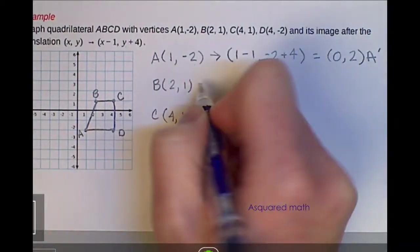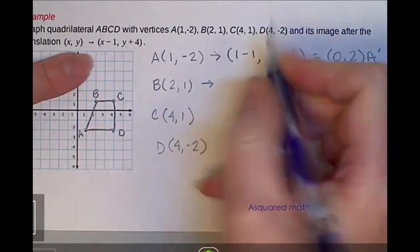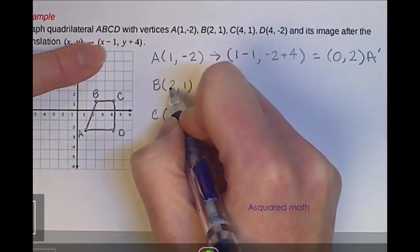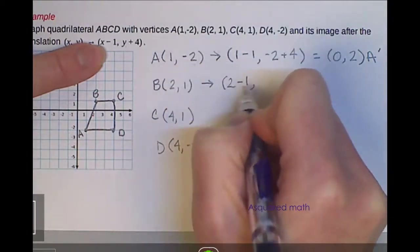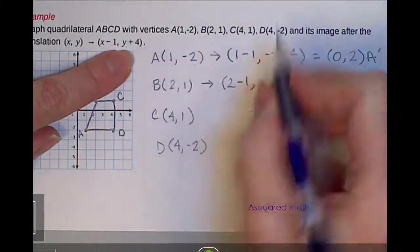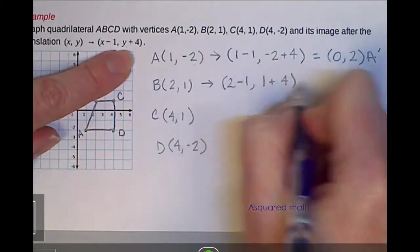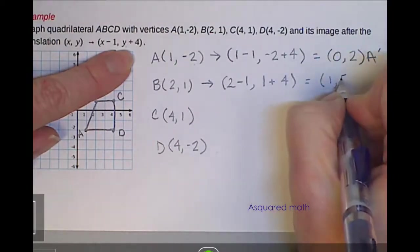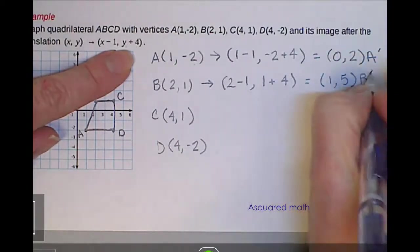B, we're going to follow the same rule here. So take your original x, which is 2, and then we subtract 1. And then take your original y value, add 4. So we have 1+4. That gives us a new point of (1,5), and that is for B prime.